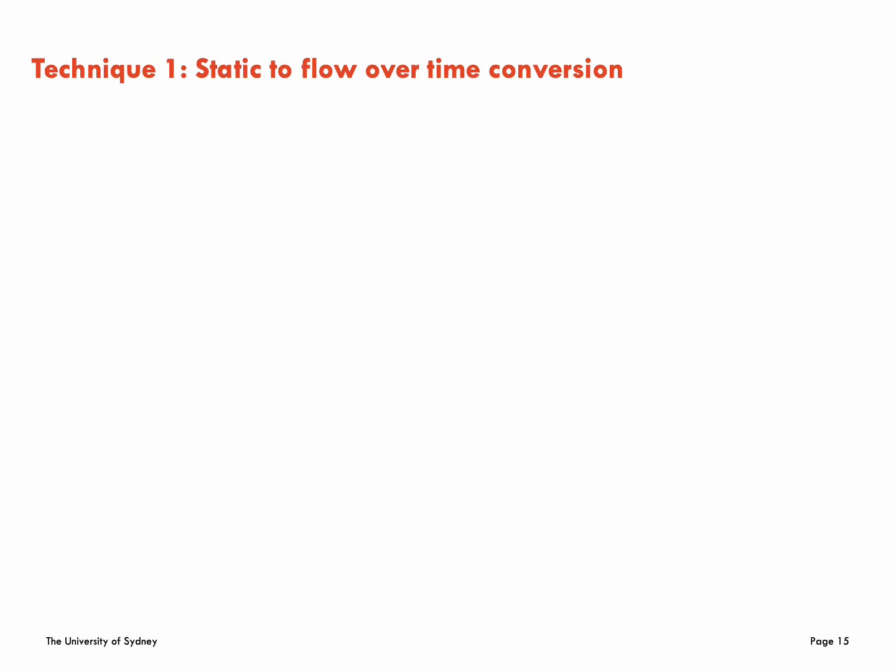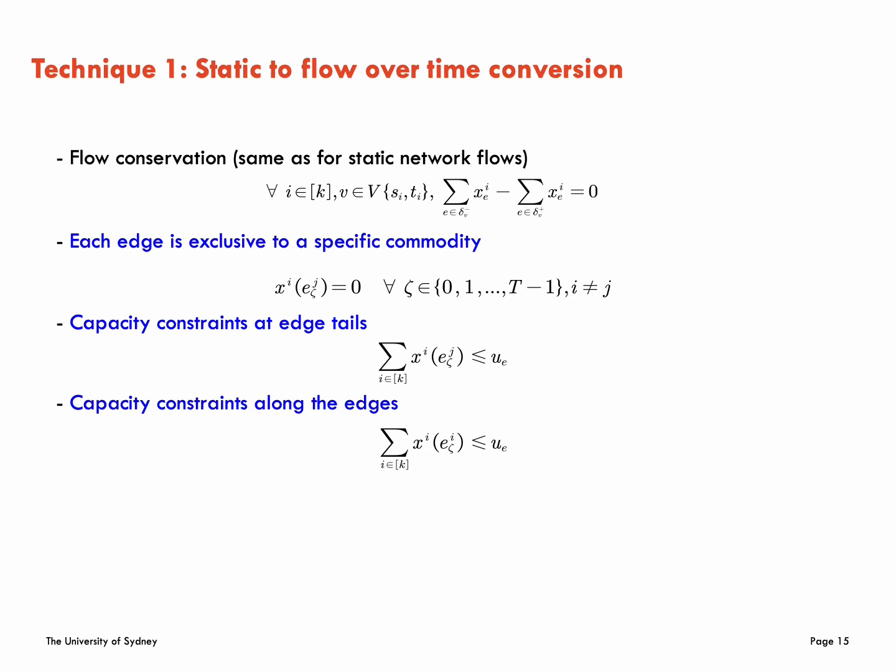We use a procedure to convert static flow in the time-expanded network with the following constraints into a feasible flow over time. The flow conservation is the same as for static network flows. We need to add further constraints as each edge is exclusive to a specific commodity, forbidding other commodities to travel along this edge to avoid the collision. And not only at edge tails, capacity constraints should be obeyed but also along the edges.